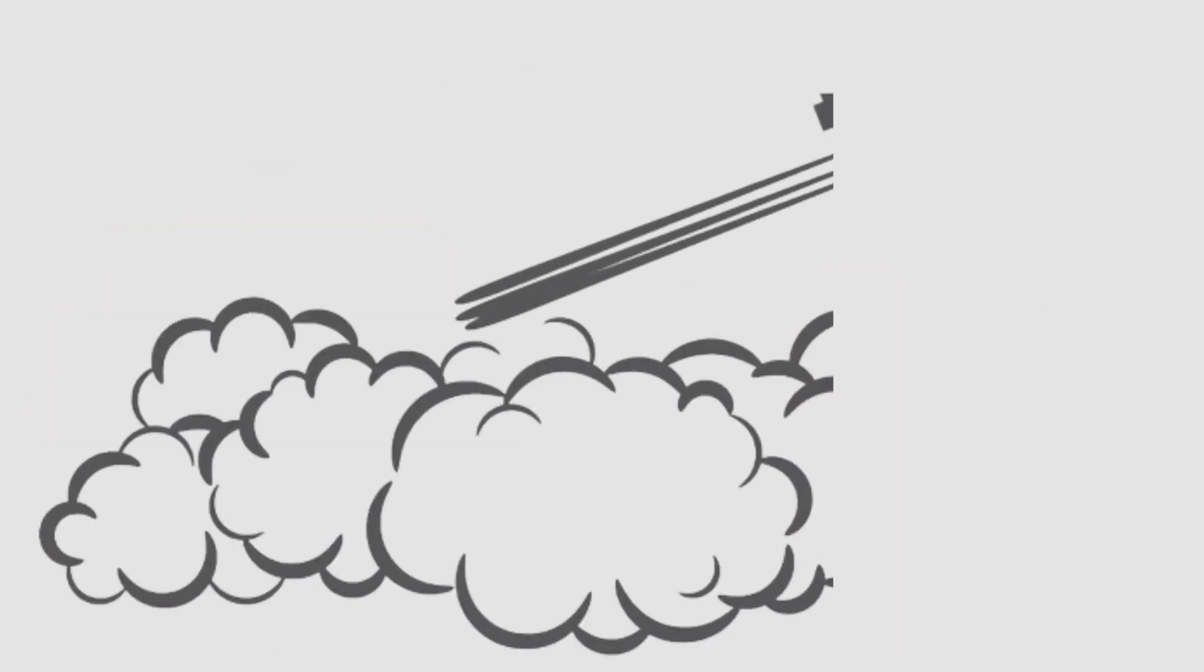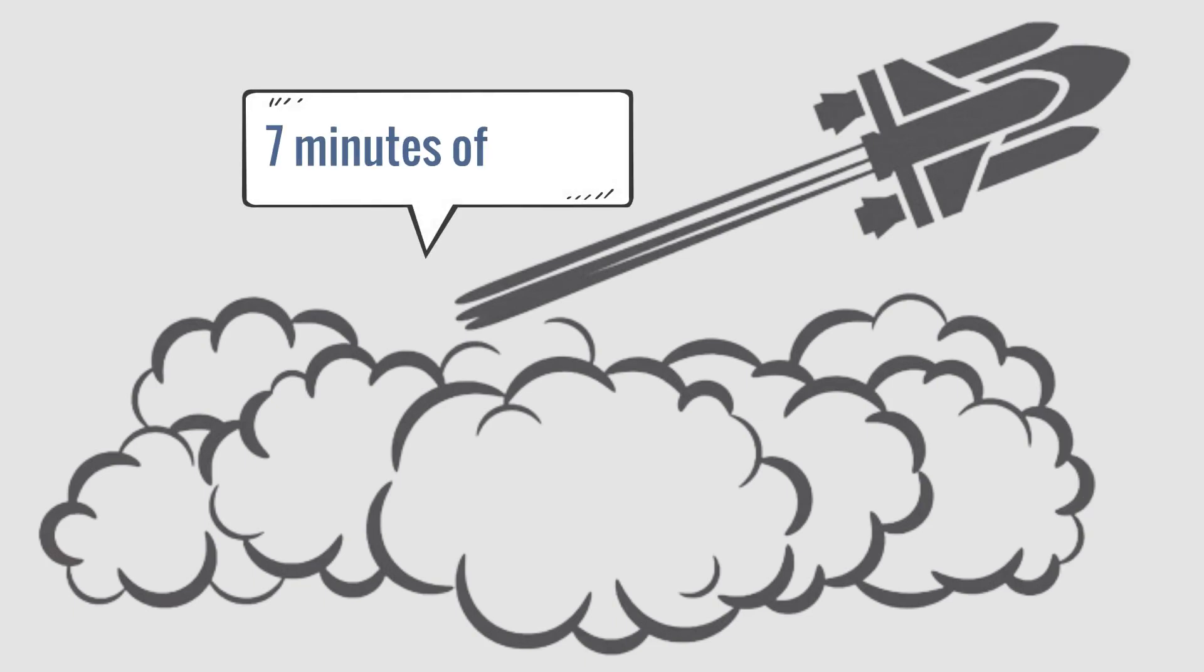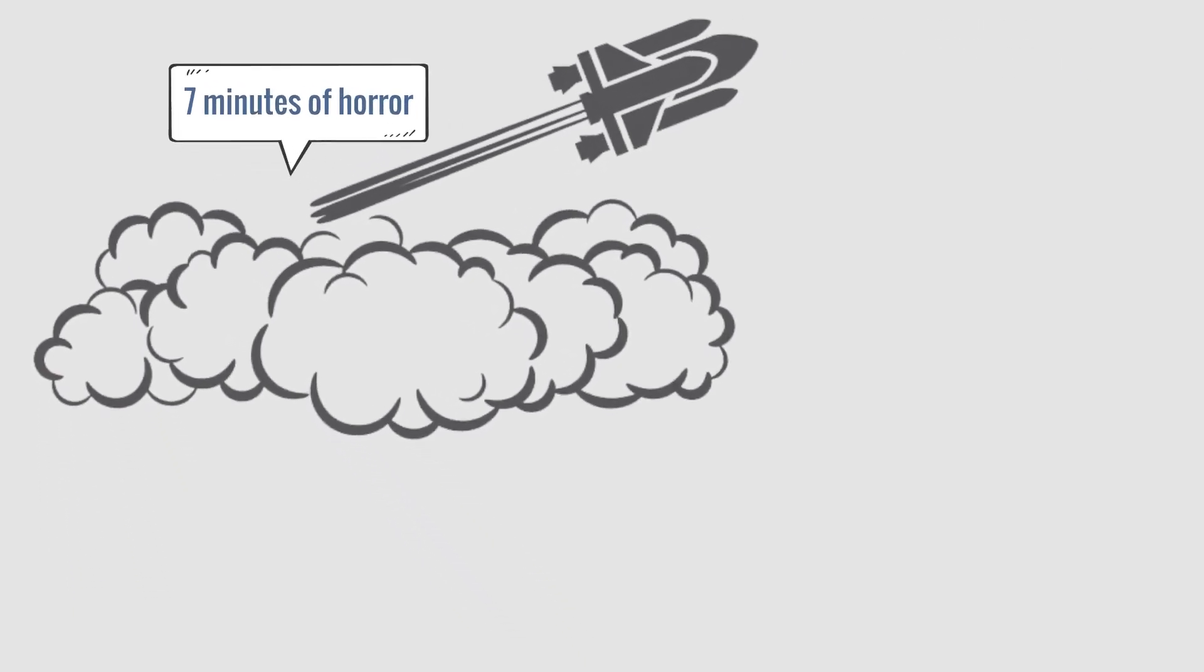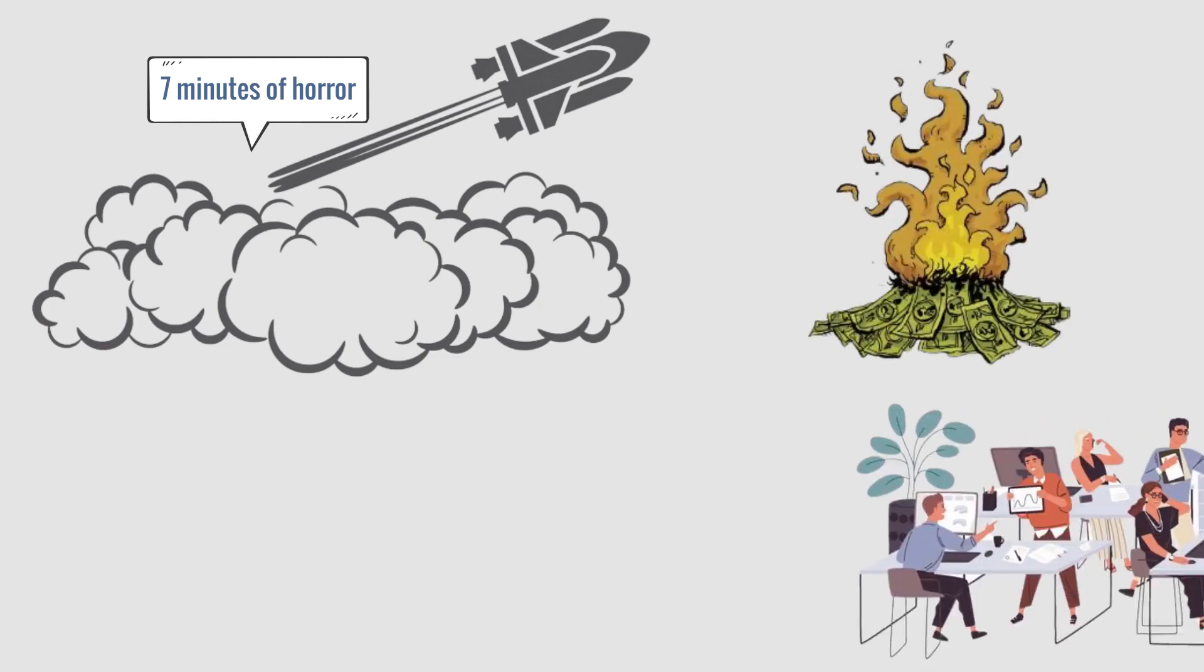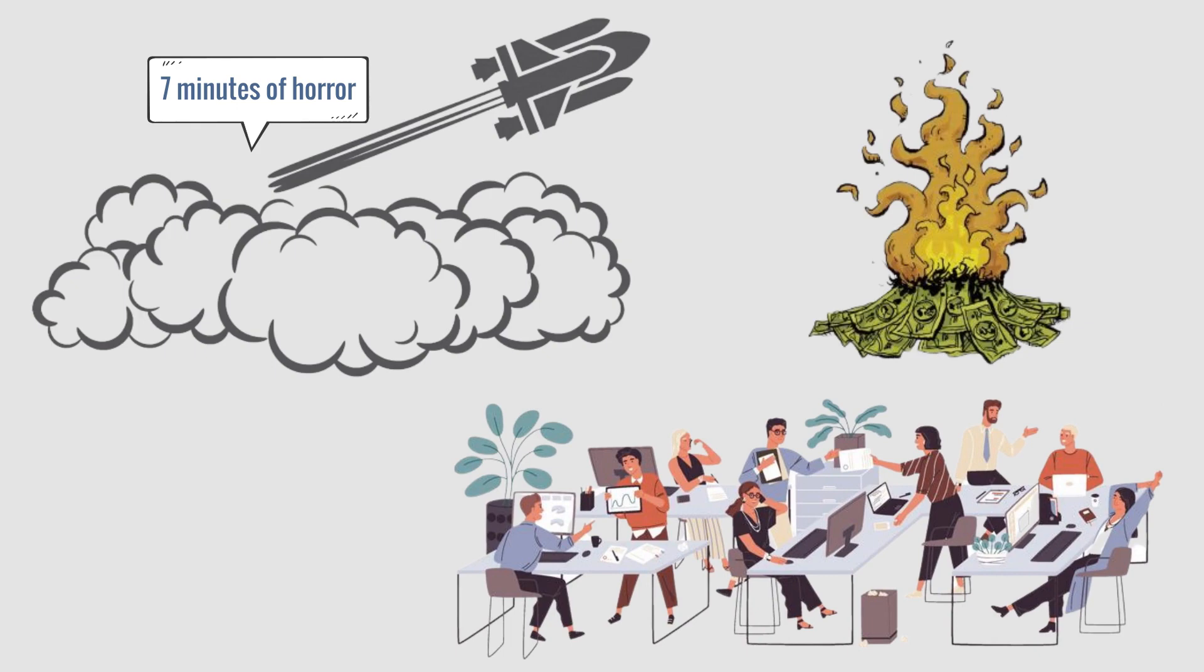The process from reaching the Martian atmosphere to successful landing will take 7 minutes, people call it 7 minutes of horror. This is the decisive moment, if the failure of hundreds of millions of dollars and years of research, testing, design, and launch, all will disappear.